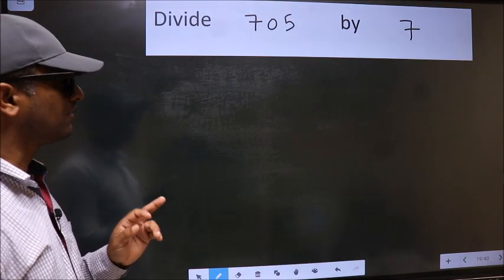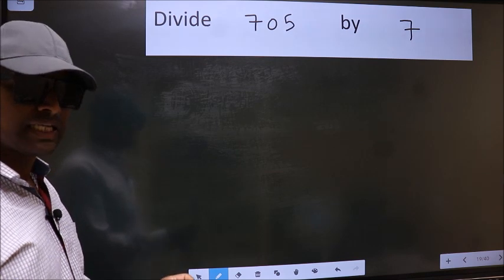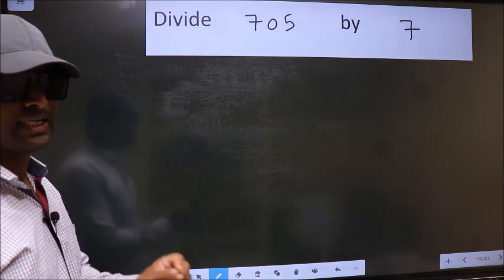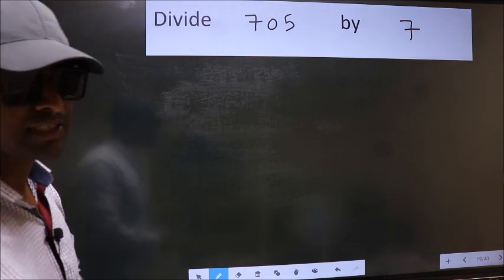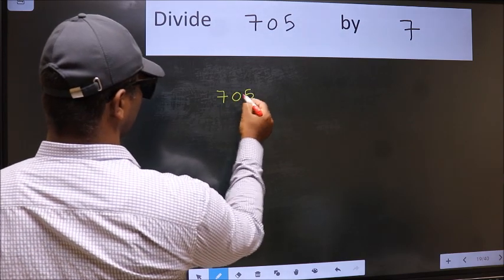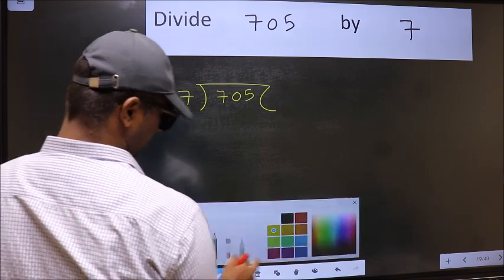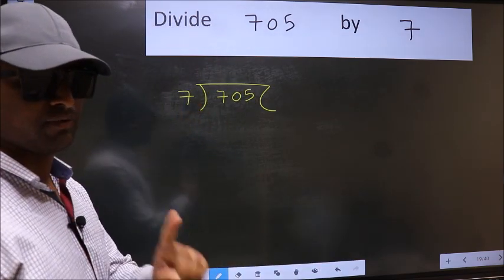Divide 705 by 7. While doing this division, many do this mistake. What is the mistake that they do? I will let you know. But before that, we should frame it in this way. 705 and 7 here. This is your step 1.